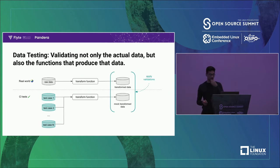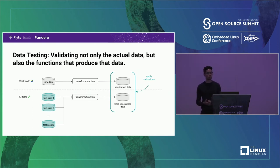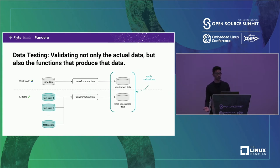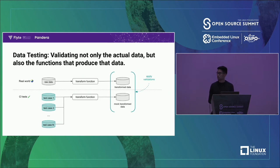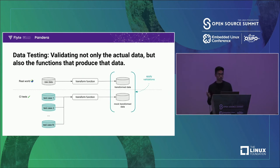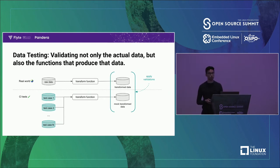The second term Pandera offers is data testing — validating not only the actual data but also the functions that produce that data. In production you grab raw data from the real world, transform it, and want to apply validations on that transformed data. But in continuous integration tests, you might have test cases to see what are some valid code paths for a transform function. By providing test cases and applying validations on the output, you're making assertions about what the function is doing to those test cases — maybe it raises an error, so you can test that.